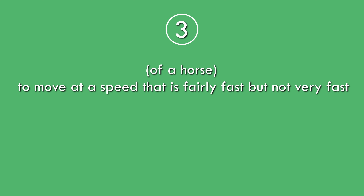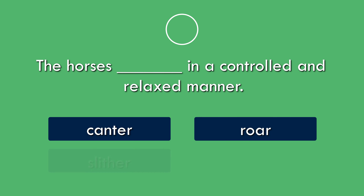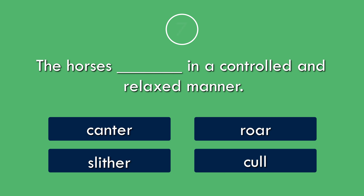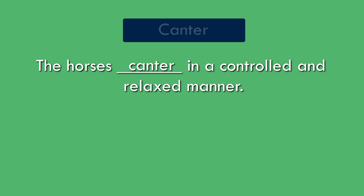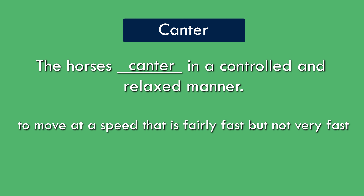Question 3. To move at a speed that is fairly fast, but not very fast. The horses canter in a controlled and relaxed manner. Canter: to move at a speed that is fairly fast, but not very fast.